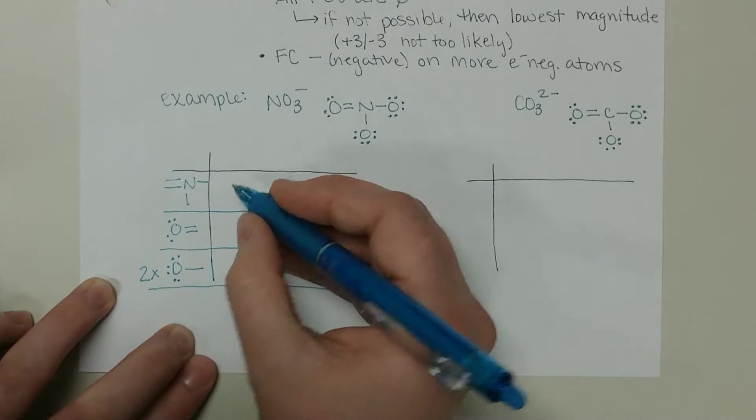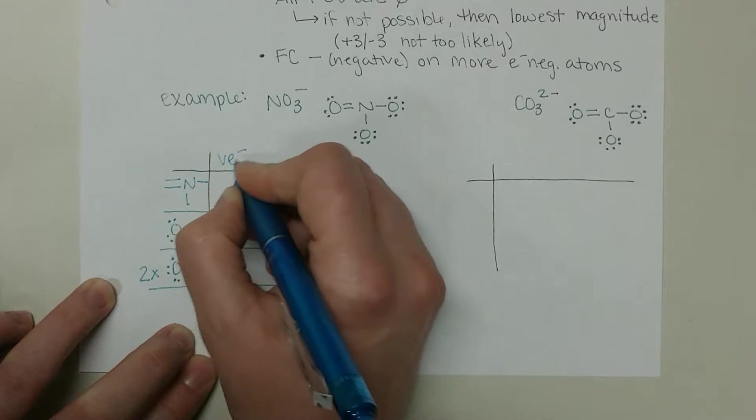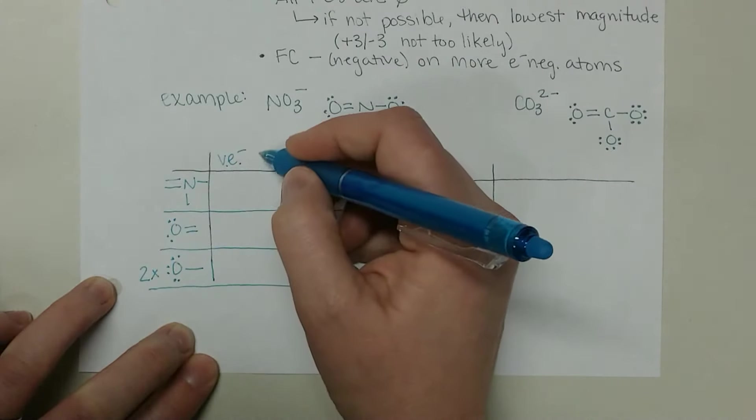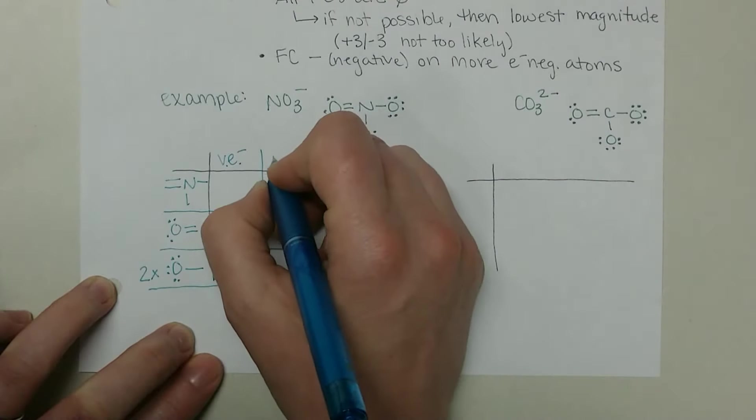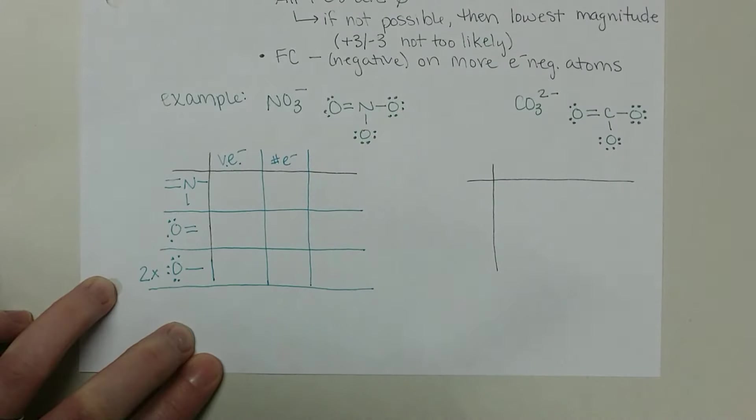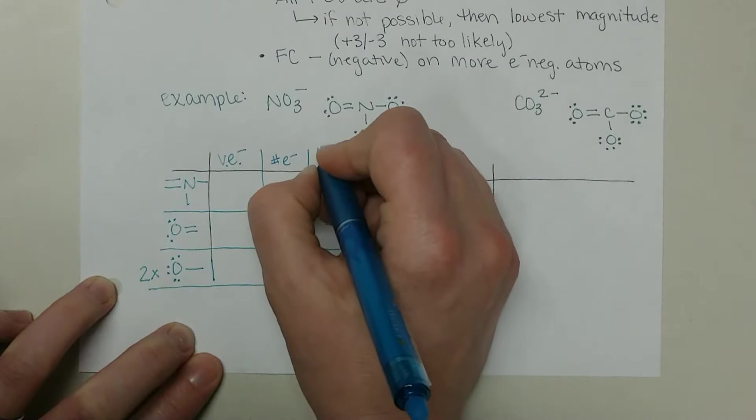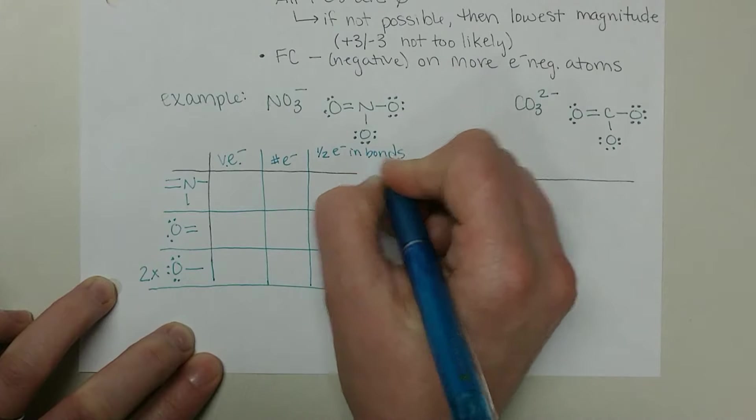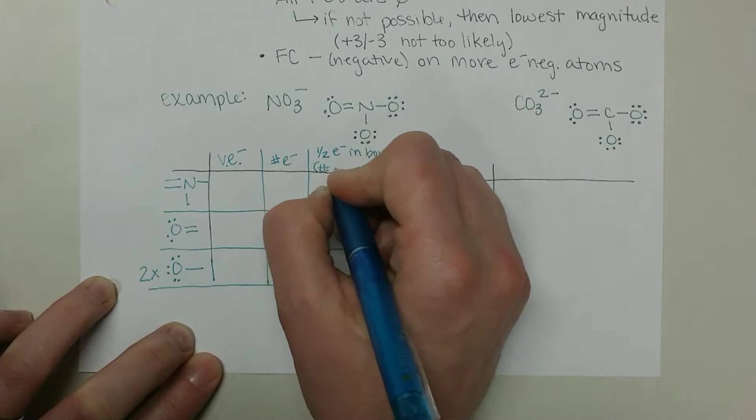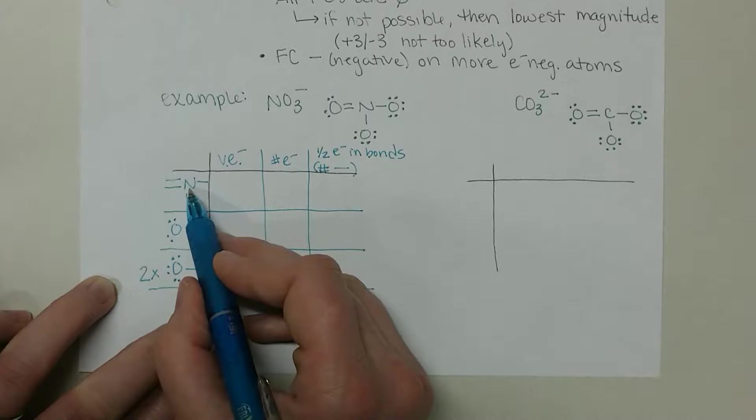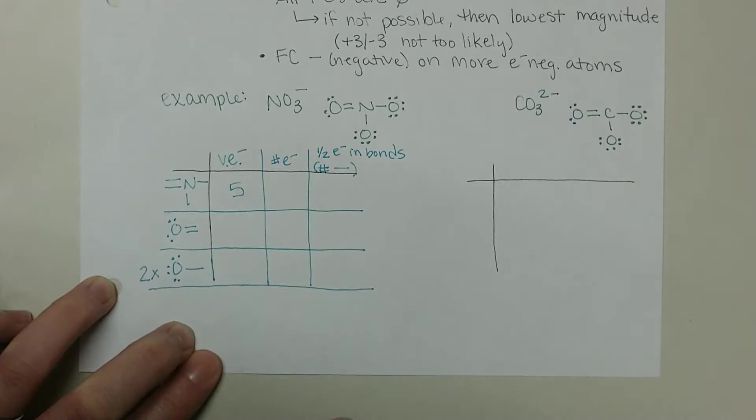We want to start with our number of valence electrons that they are all bringing to the molecule, and then count the number of electrons - counting the dots. Then we want half of the electrons in bonds, where I look at the number of lines that are on that atom.